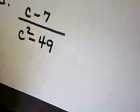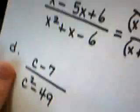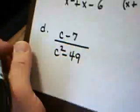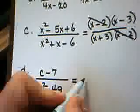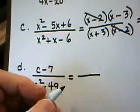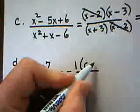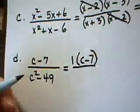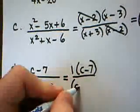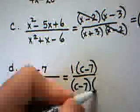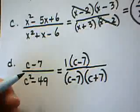My final question here. Part D. Let me get it balanced. There we go. All right. Part D. We have in the numerator, c minus 7, which actually factors as 1 times itself. In the denominator, c squared minus 49 factors as c minus 7 times c plus 7. That's the difference of two perfect squares.